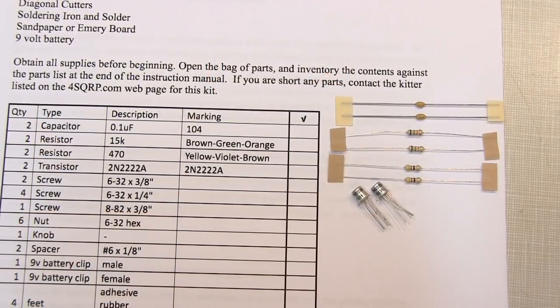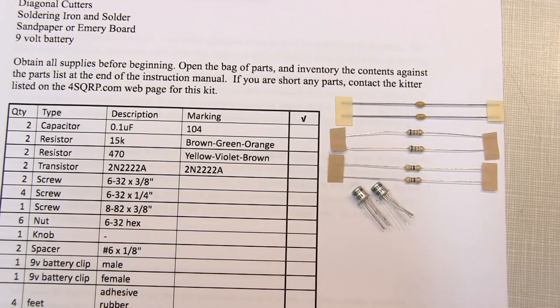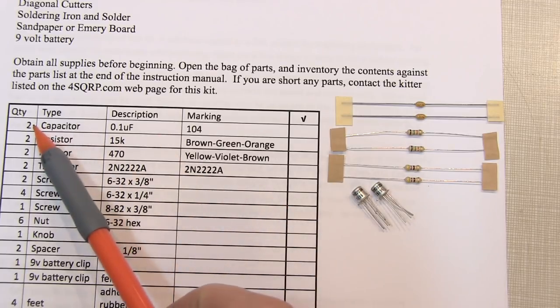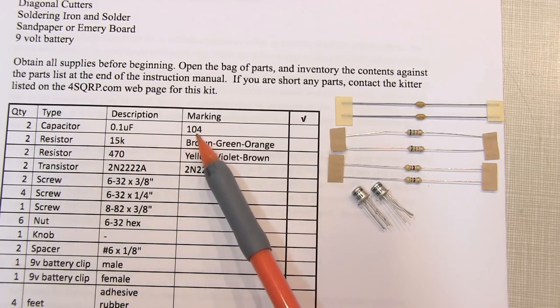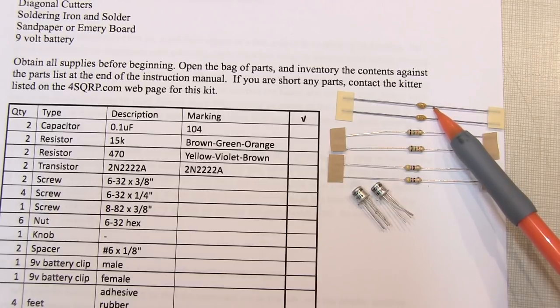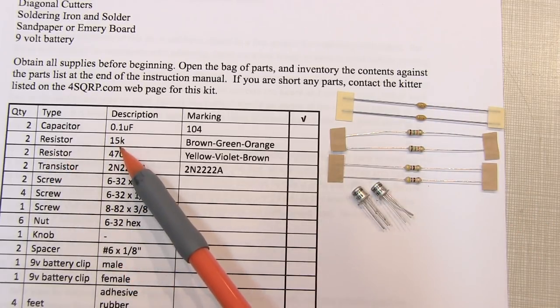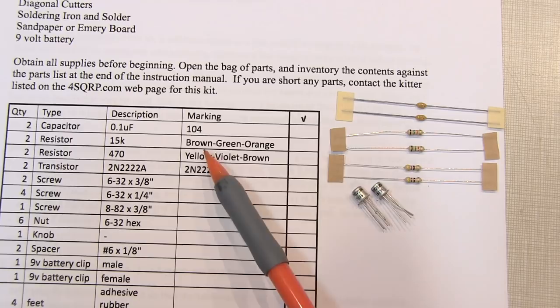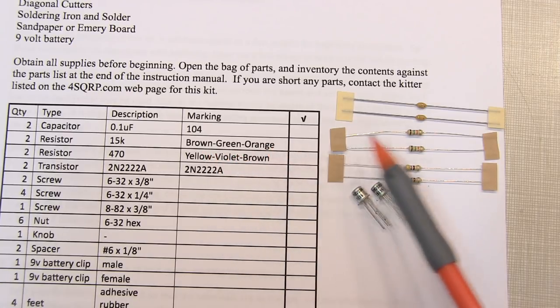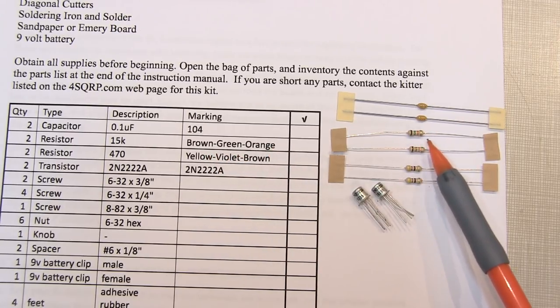The first thing to do is to take some inventory. Starting off with the electronic components we should find two capacitors with a marking 104 and that's these two components here. Two 15k ohm resistors and they will have a brown, green, orange, and gold band just like these.